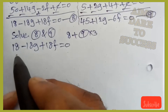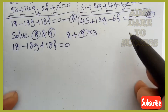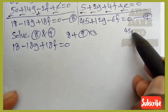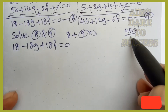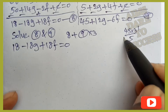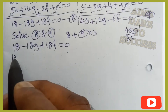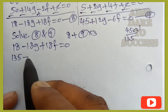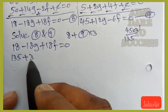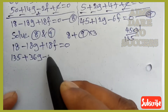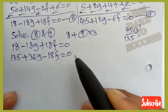Solving equations 8 and 9 to find g: equation 8 is 18−18g+18f=0. Multiply equation 9 by 3: 3×45=135, 3×12g=36g, 3×(−6f)=−18f, giving 135+36g−18f=0. Adding to equation 8: 18f and −18f cancel, 18+135=153, −18g+36g=18g, so 153+18g=0. Therefore g=−153/18=−17/2.